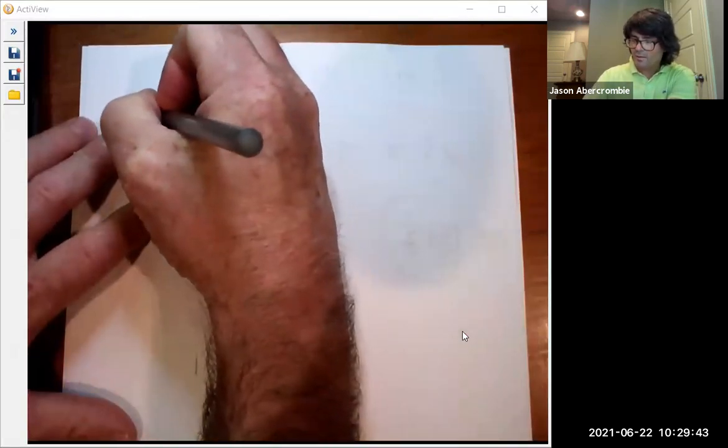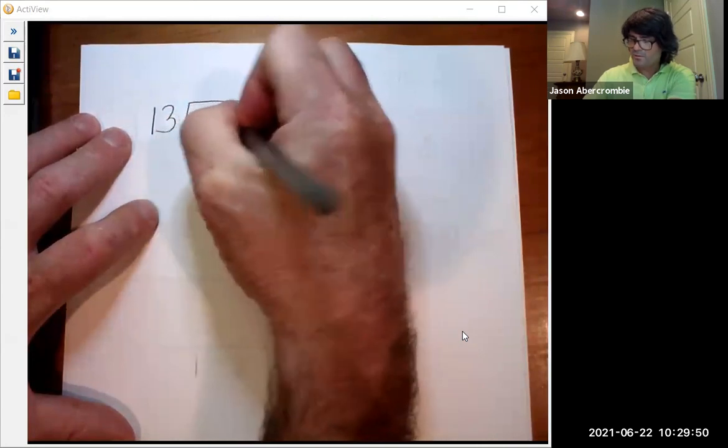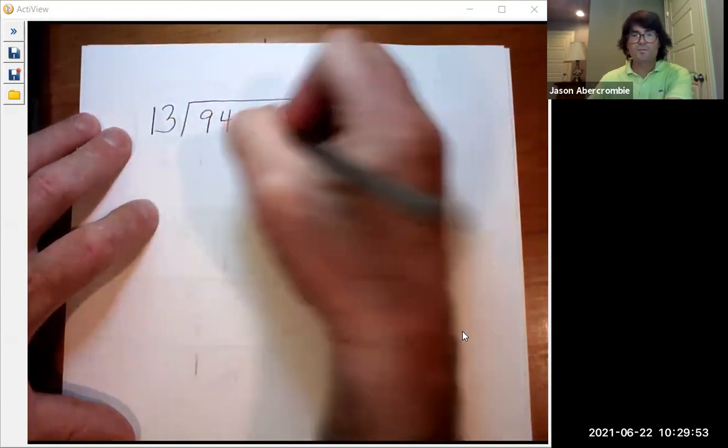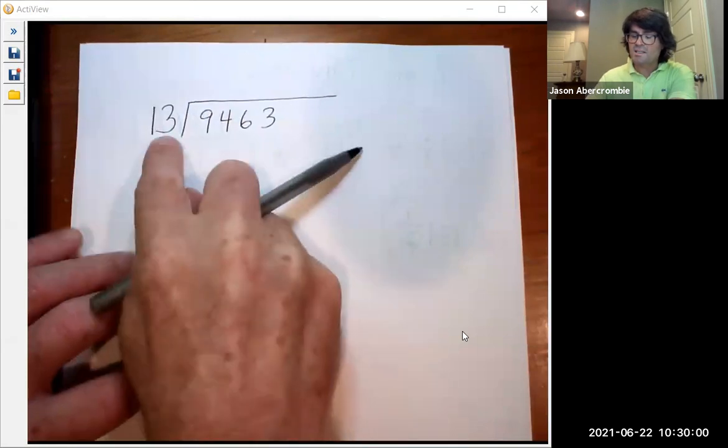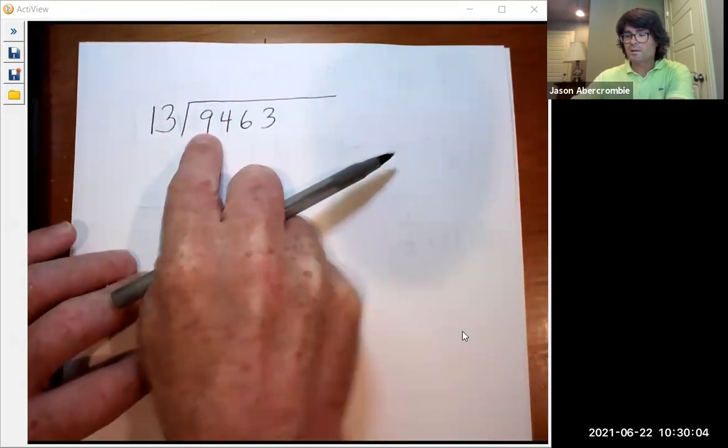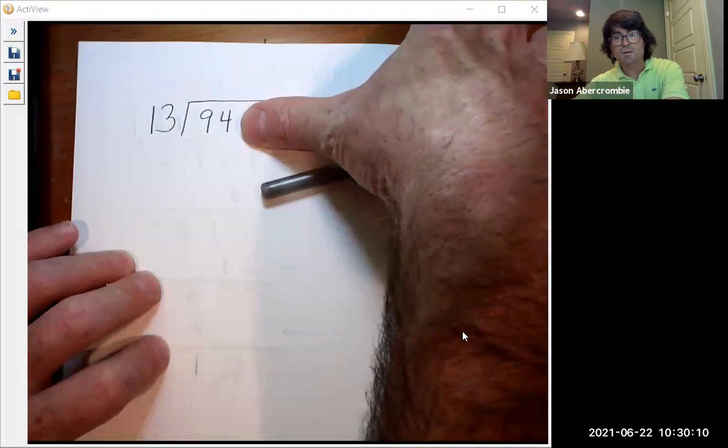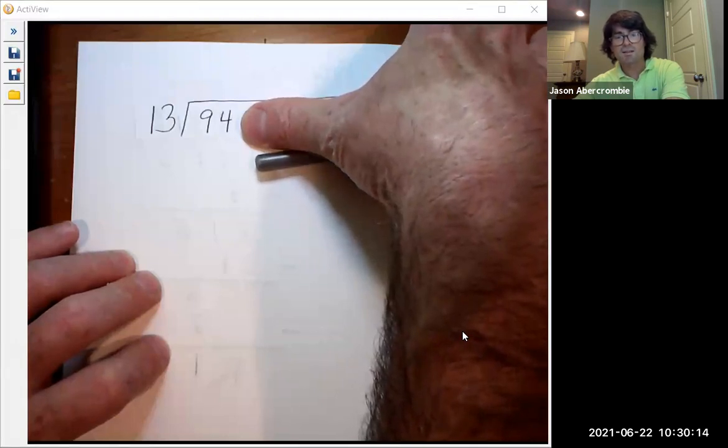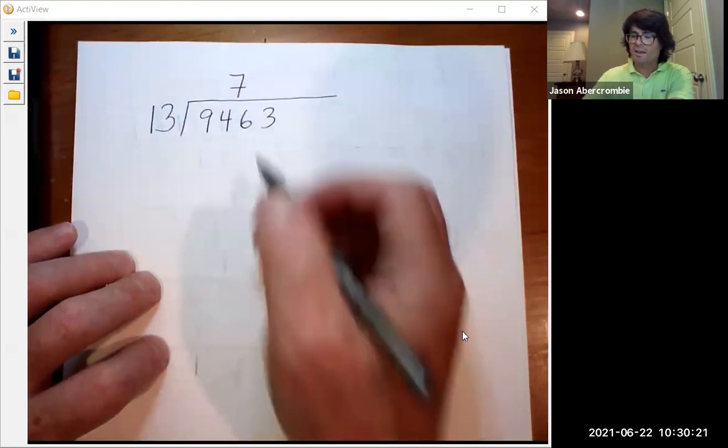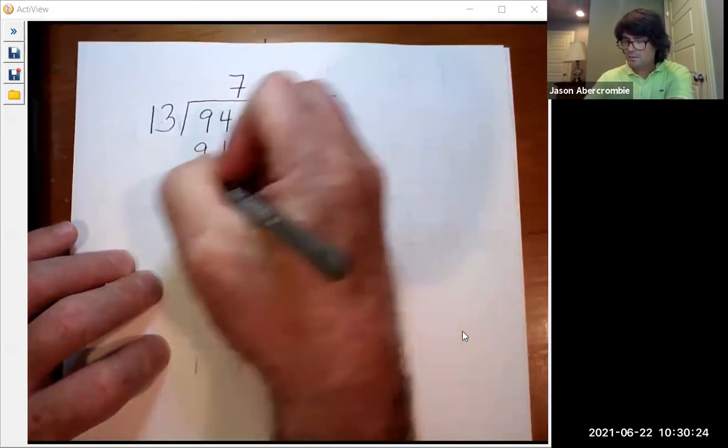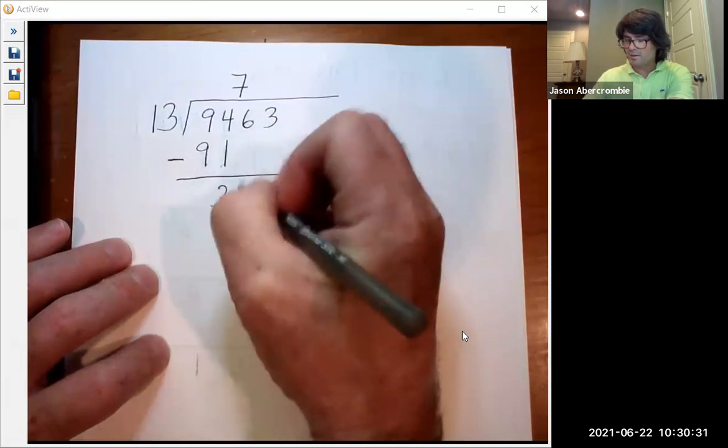This time we're going to do 13 divided into 9463. So that's a pretty big number, 9463. My first question is, does 13 go into 9? The answer is no. So then we go to 94. Does 13 go into 94? The answer is yes, it does. 13 times 7 is 91, so 13 goes into 94 seven times, just like that. And 7 times 13 is 91. Subtract. 94 minus 91 is 3. Bring down these other numbers.